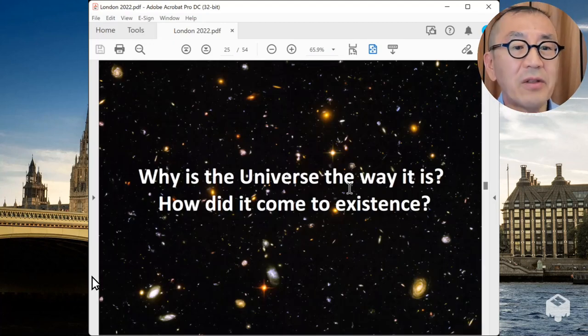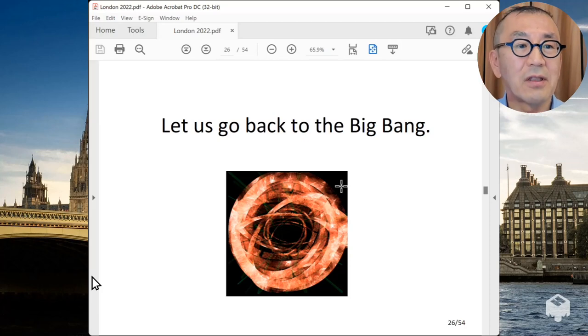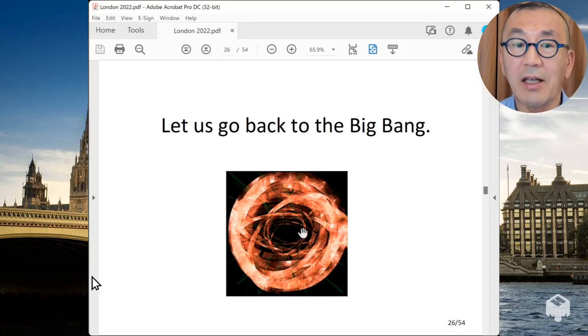This is a sort of amazing story that the universe is such a place so that we are able to ask this kind of question. So why is the universe the way it is? How did it come to the existence? The movie is trying to discuss some of these fundamental questions. So to address that, let's go back to the beginning of the universe, the Big Bang. This is another image of the Big Bang in the movie.